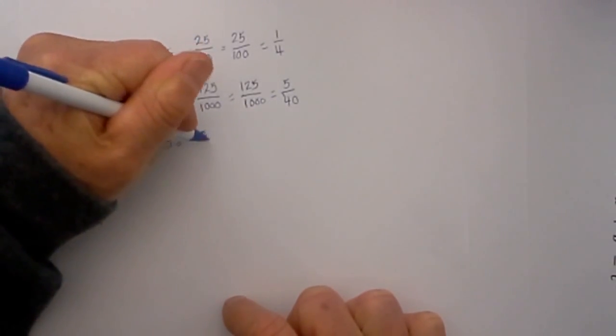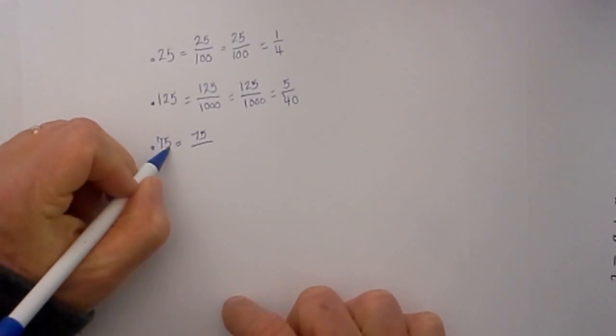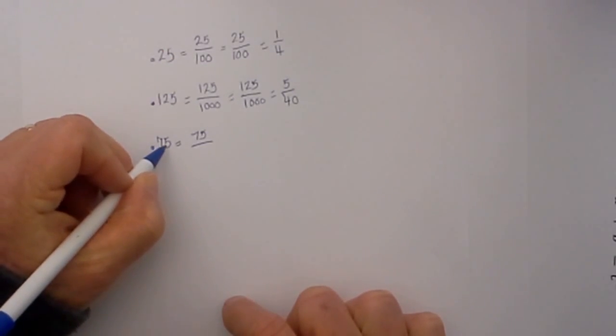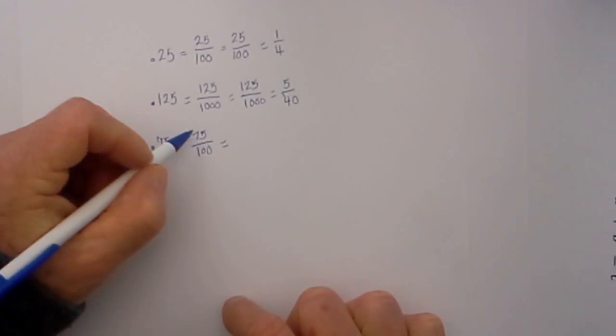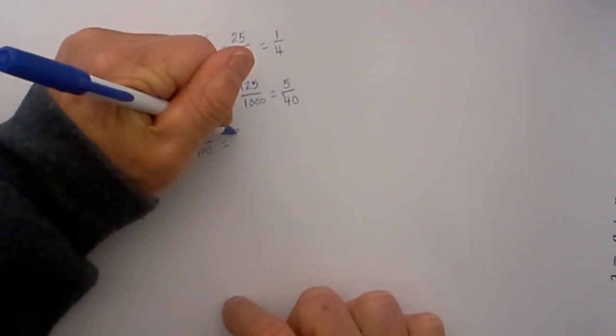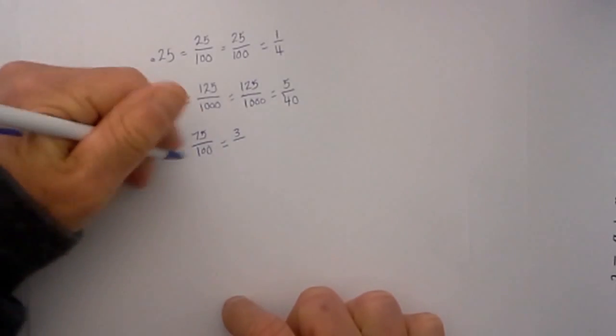And again I know that 25 will go into 75 three times, and then 25 will go into 100 four times, and so there is your nice fraction.